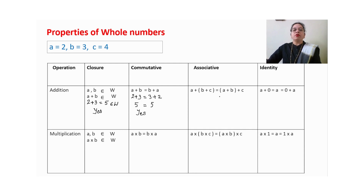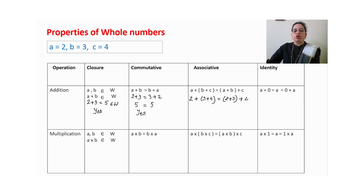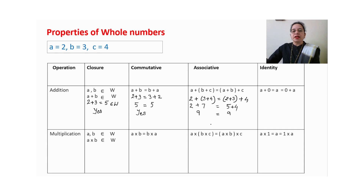For associative property, we have three numbers. We keep two numbers in one bracket, add with the third number, then switch which two are bracketed. If both sides give the same answer, we have associative property. Substituting a=2, b=3, c=4: (2+3)+4 equals 2+(3+4). Right side: 3+4=7, then 2+7=9. Left side: 3+2=5, then 5+4=9. Both sides equal 9, so yes, we can observe associative property in addition of whole numbers.